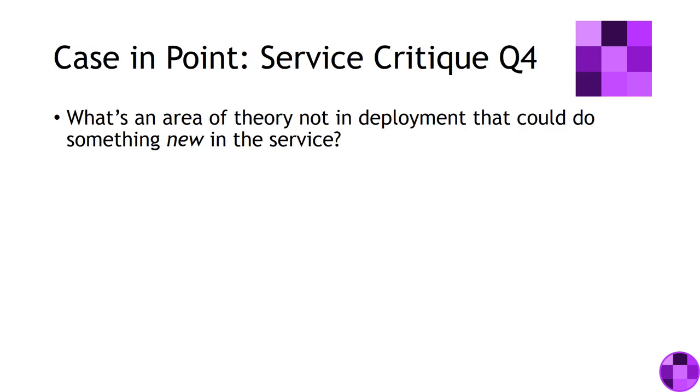Now one of the case in point of absolute points of success in the service critique, in question four, where it says, what's an area of theory not in deployment that could do something new in the service? And people who went, looked at what they'd argued, looked at the evidence they'd used prior, and then pulled in either a complementary theory or a clashing theory. But either way, it was a theory that they had not laid out prior in the paper. And if there was a secret to this particular question, this was it.